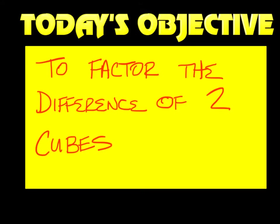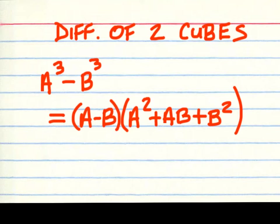Today's topic is to factor the difference of two cubes. The general form is a cubed minus b cubed. When you factor it out, it is in the form of a minus b, times the quantity a squared plus ab plus b squared.